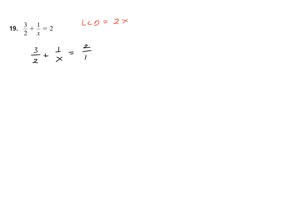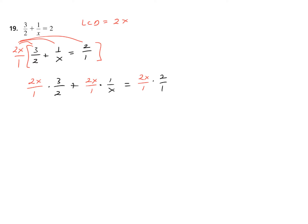Once we have the LCD identified, we group the entire equation and multiply through by the LCD over 1. Each time we distribute, you are going to get simplifications that will leave the denominators 1 — in essence, you're clearing fractions. That illustrates what the distribution looks like before the canceling. If you try to do it all together, there's too much writing and too many colors — you won't be able to follow anything.